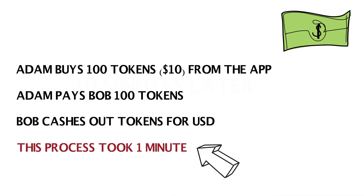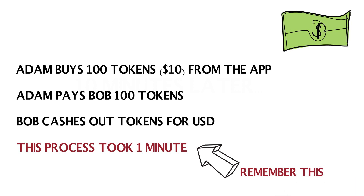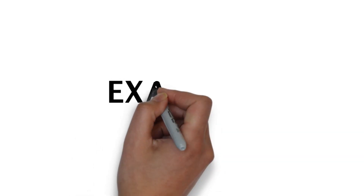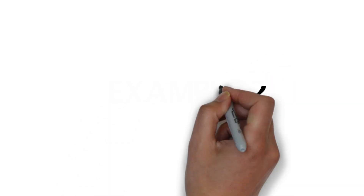This is very important, so make sure you remember this. This is also the token velocity — i.e. the speed at which tokens flow through the Carfair system. Now let's introduce our second example to illustrate how most investors think.